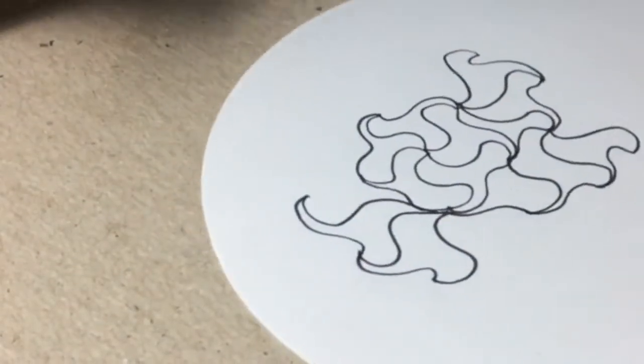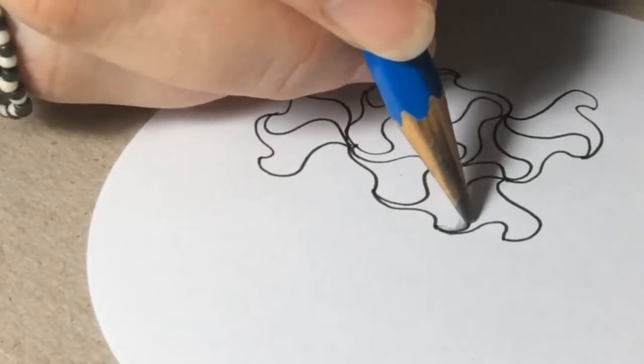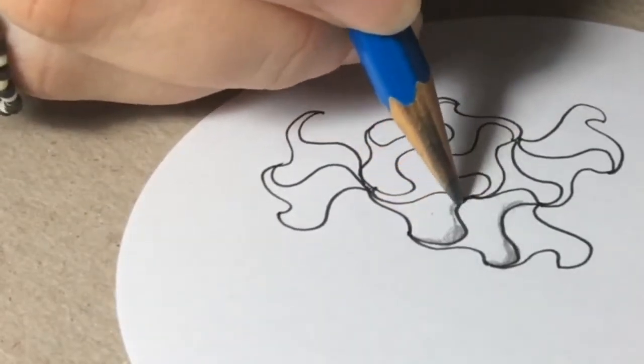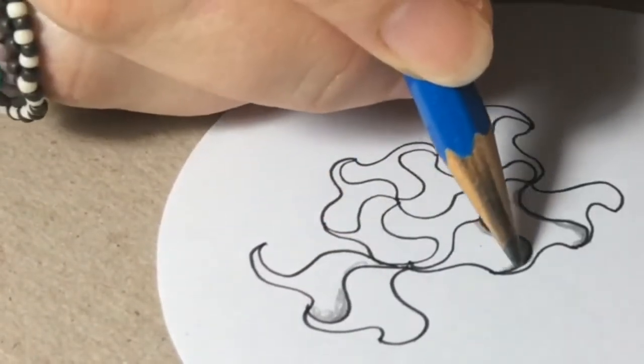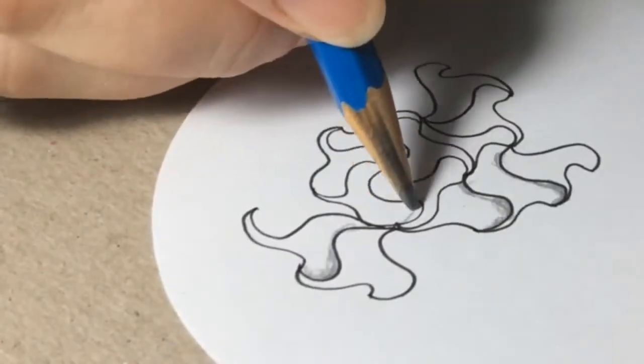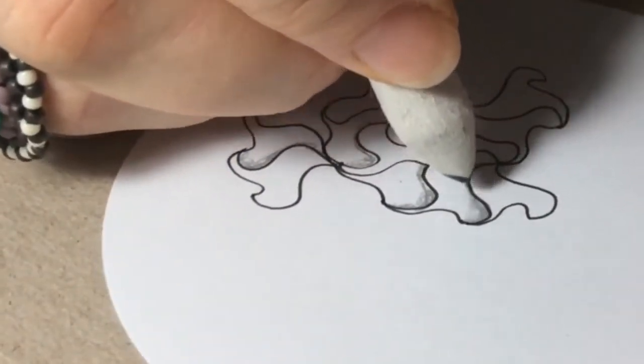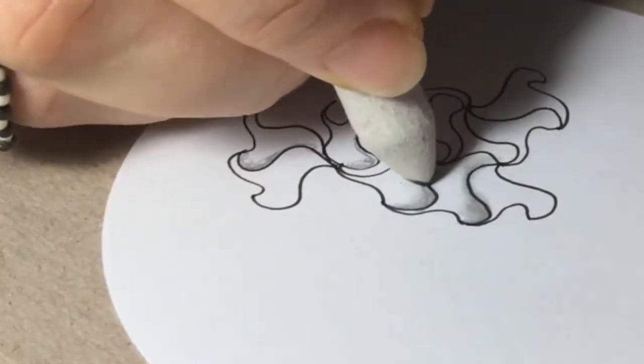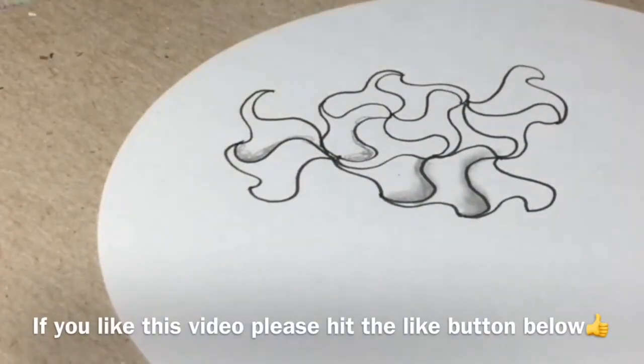Now we can do some shading. We'll just add some shading here, like this, and some on each of these little curves like this. Then take your blending stump and just blend it in. I always call these a blending stump, aren't they called something else too, like tortue? I always want to say tortilla, I'm Mexican. Tortillion, what is it?